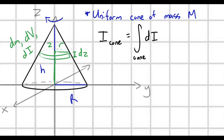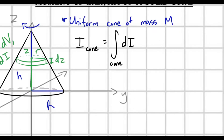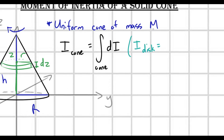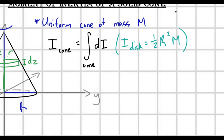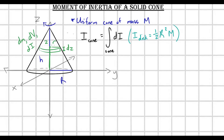What are each of these dI elements going to be? The moment of inertia of a disk is one-half times the radius squared times the mass. So for an infinitesimal disk, this is going to be equal to one-half times little r squared times dm. This is equal to dI.